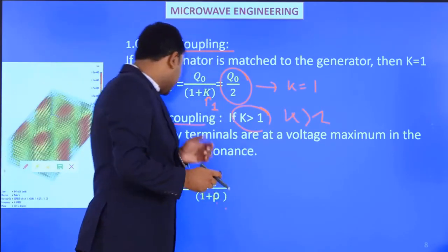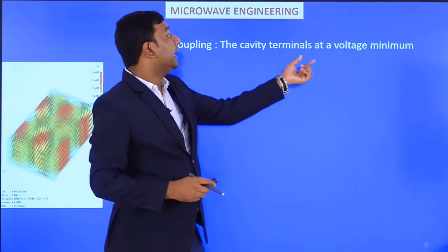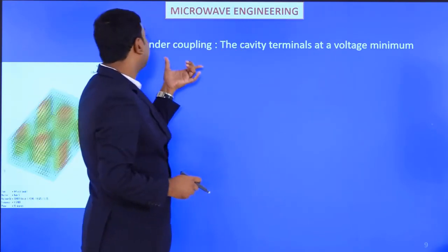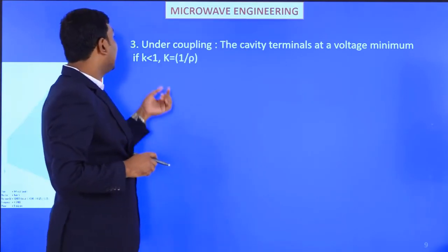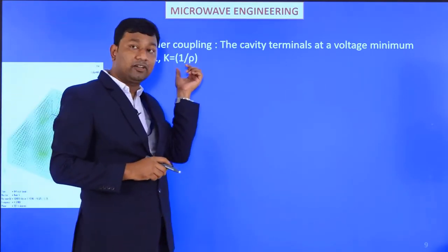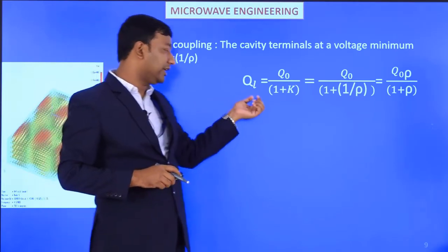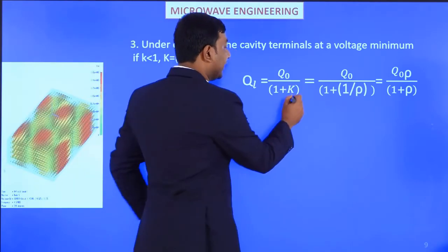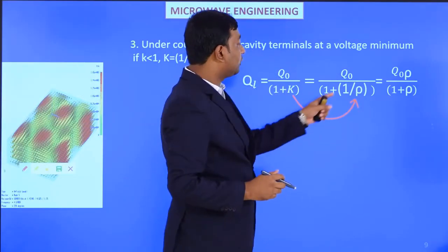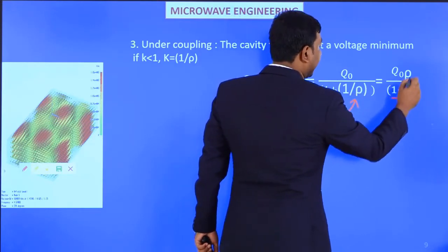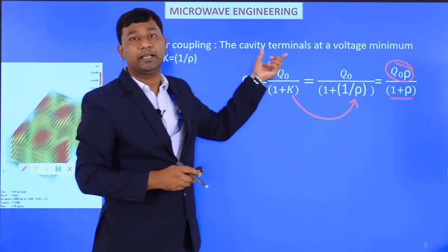Third, under coupling: the cavity terminals are at a voltage minimum, and K is less than 1. Here K = 1/ρ, the reciprocal of the voltage standing wave ratio. Placing this value gives Q_L = Q₀/(1 + 1/ρ), which simplifies to Q₀·ρ/(ρ+1). That is the condition for under coupling in a cavity resonator.